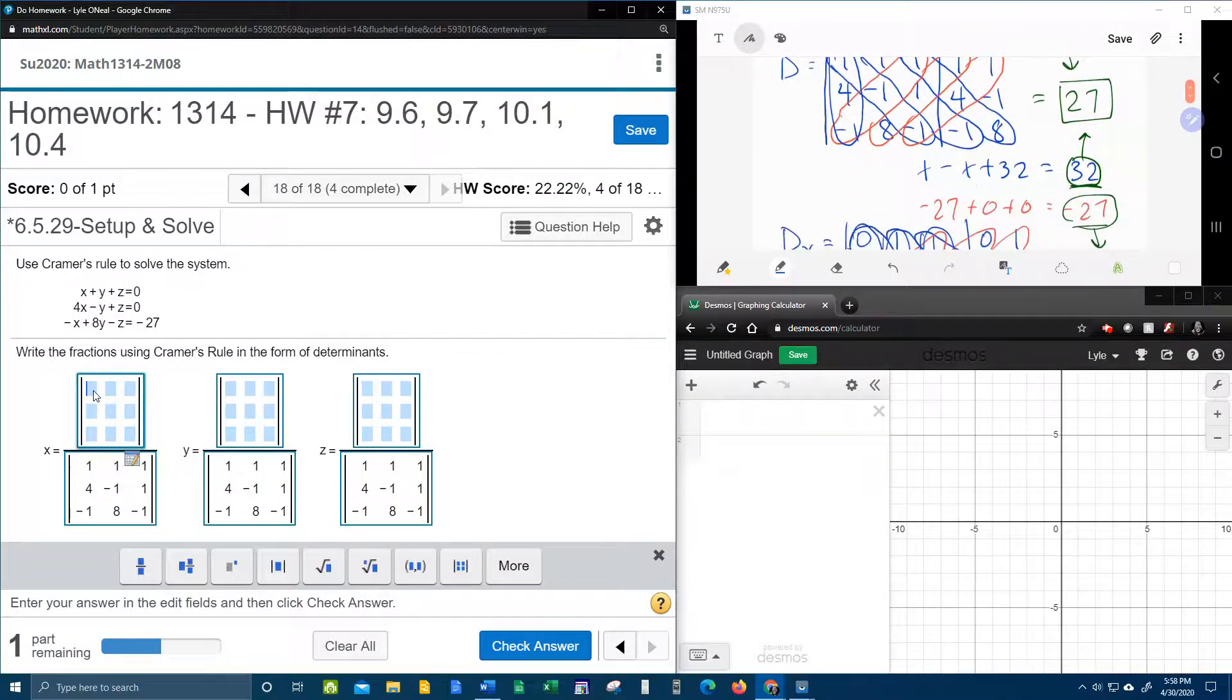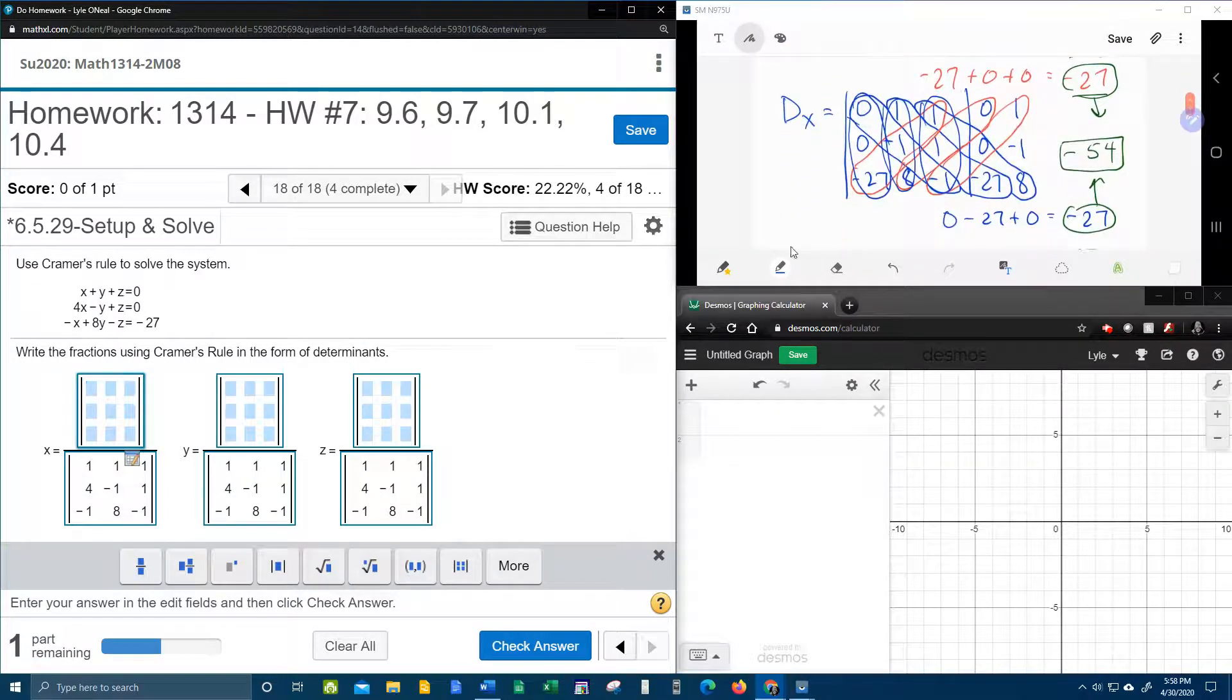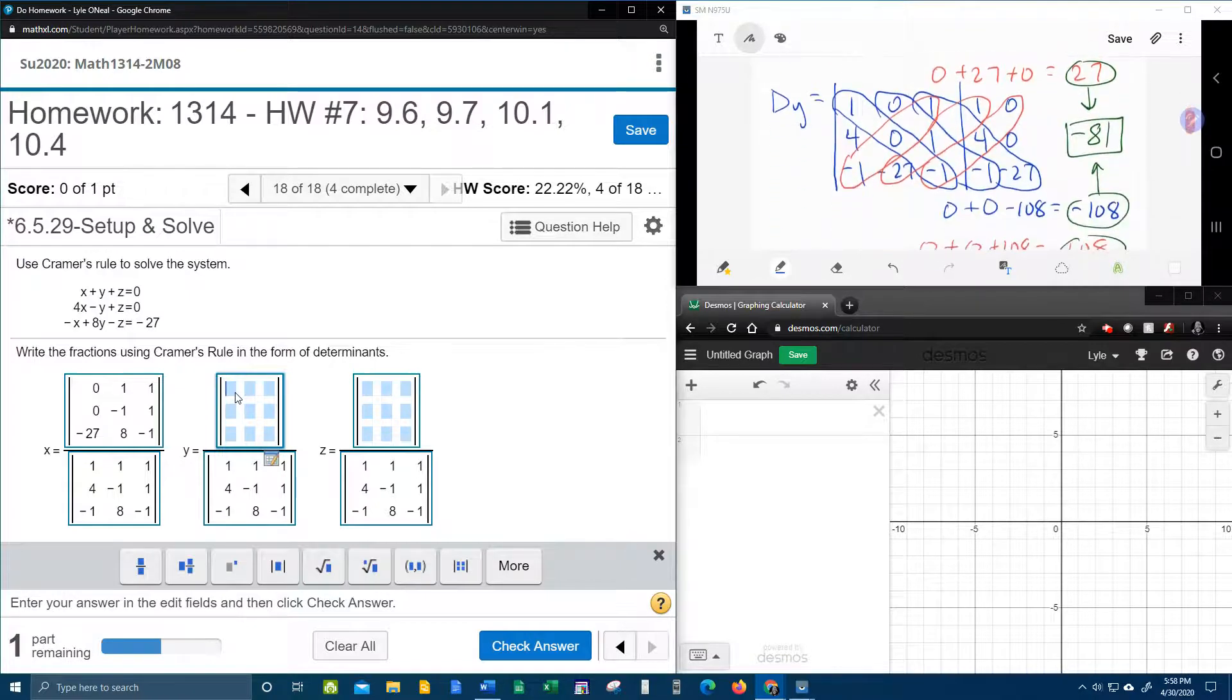So, now for the numerator, we need D sub x, which now I have pulled up in this window. That's going to be 0, 0, negative 27 going down. 1, negative 1, and 8 going down. And, 1, 1, negative 1 going down. And remember, you're going to be very careful when you're putting these in. Because if you miss even one sign, instant death.